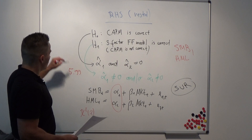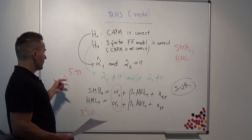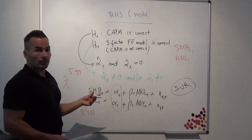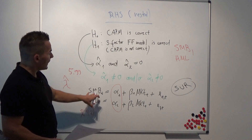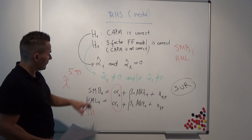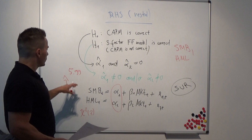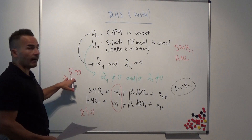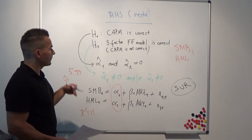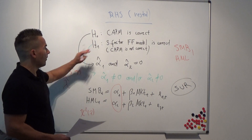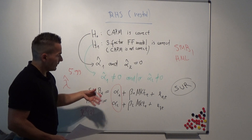If the estimated test statistic lambda-hat gives a value below 5.99, this implies the CAPM is the correct model — it can fully explain the size factor and value factor simultaneously. If the test statistic is larger than 5.99, the CAPM is not correct because it cannot price these two additional factors of the three-factor model; something remains unexplained.